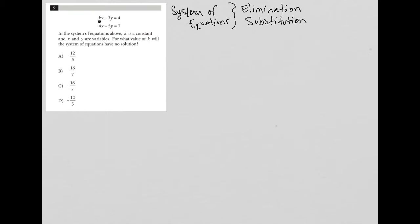So, the question says, in the system of equations above, k is a constant and x and y are variables. For what value of k will the system of equations have no solution? Okay, so that's very important.